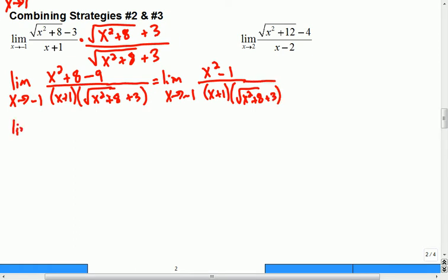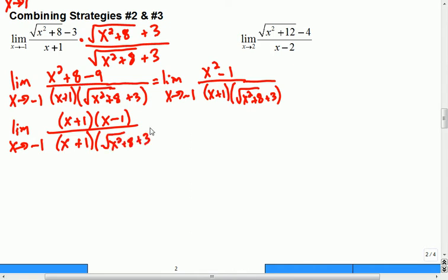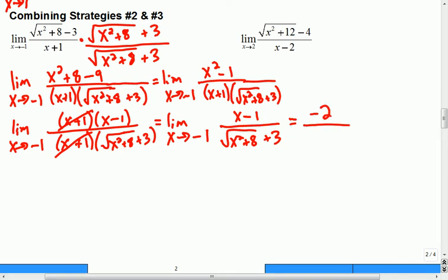Okay, so at this point hopefully you recognize where to factor and this is going to be (x+1)(x-1) and that's going to remove the problem at x equals negative 1, which is the limit as x goes to negative 1 of (x-1) over square root of x squared plus 8 plus 3, and if I put in negative 1 that's going to be negative 2 divided by 6, so negative 1 third. Can anybody confirm that? Yeah, okay, perfect.